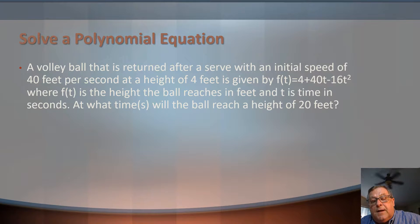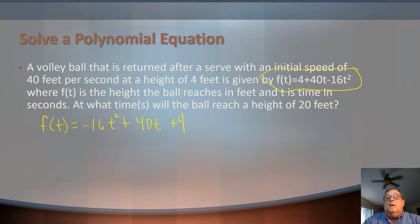As I begin to look at this, the first thing I've noticed is that this function doesn't really suit my eye, and I'm going to rewrite it as f(t) = -16t² + 40t + 4. I just like the way that looks better. Now, we're trying to find out what's the time that it's going to reach 20 feet. And it starts off at 4 feet.